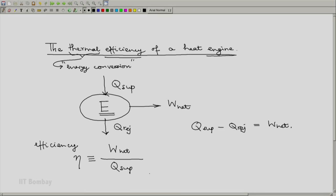A subsidiary definition, a derivation from this, would be that since W net is heat supplied minus heat rejected, if you substitute for W net and do a step or two of algebra, you will get this to be equal to one minus heat rejected divided by heat supply.